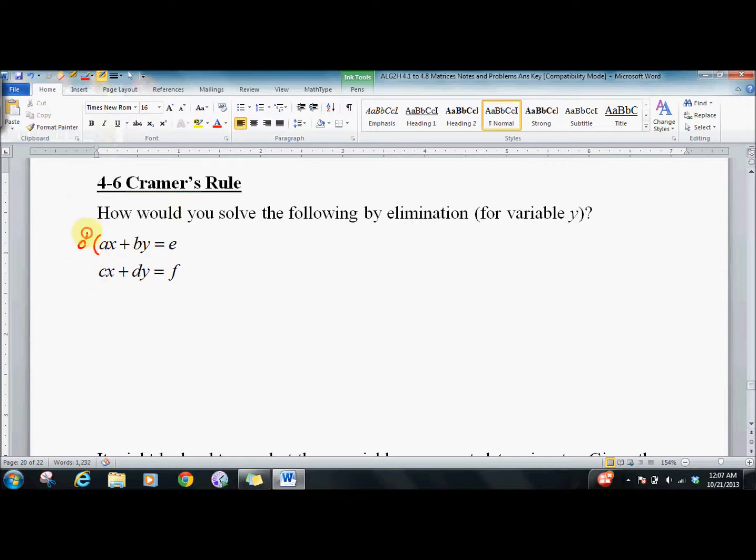Let's multiply all that by d, multiply all this by negative b. We get adx + bdy = de, and here I get negative bcx + negative bdy = negative bf. These cancel. I get adx minus bcx equals de minus bf.